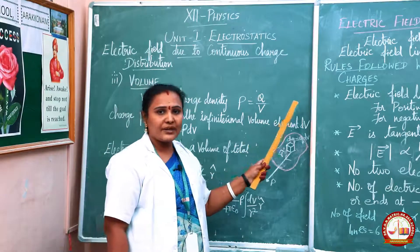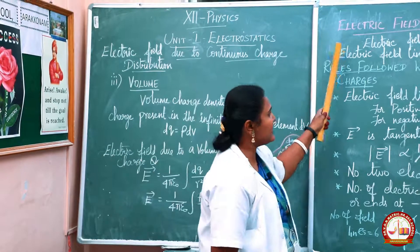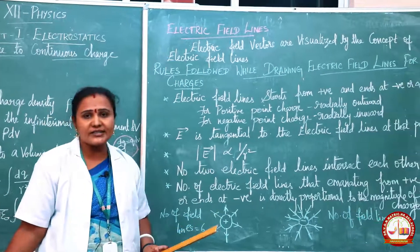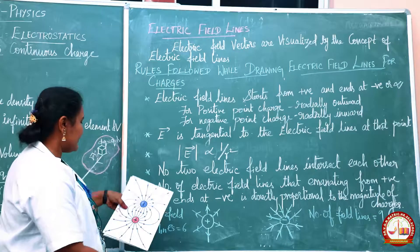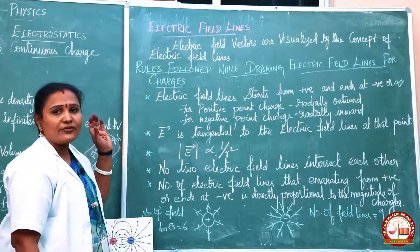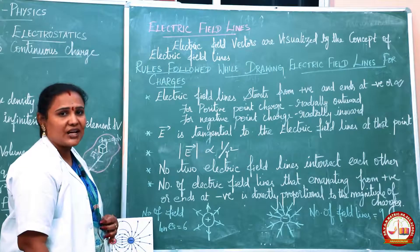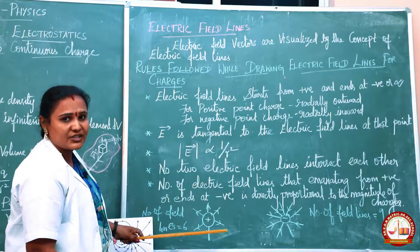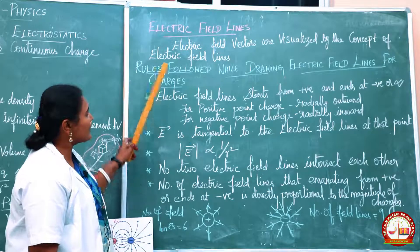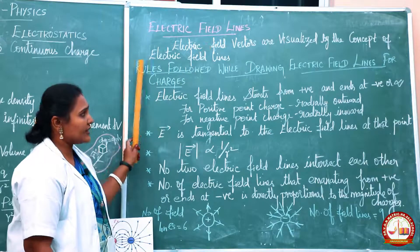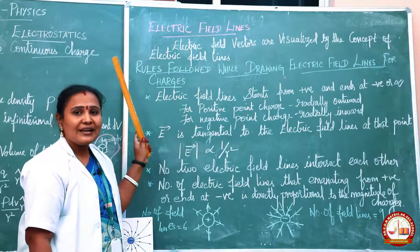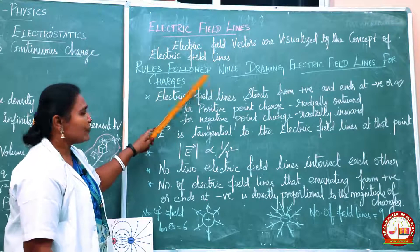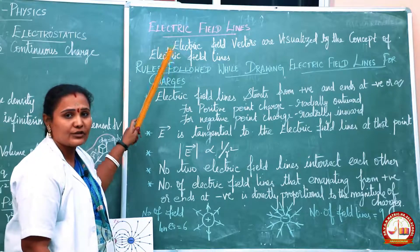The next topic is about electric field lines. Electric field vectors are visualized by the concept of electric field lines. They are a set of continuous lines which are the visual representation of the electric field at some region of space.